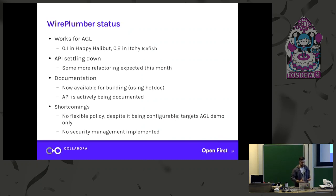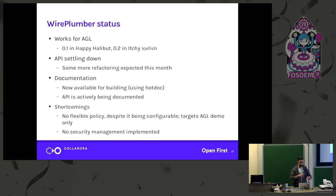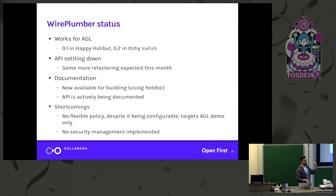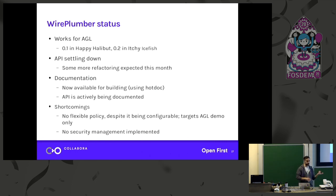So what's the status of WirePlumber right now? It currently works nicely for AGL. On the demo that we have at Building K, we use PipeWire and WirePlumber. The API is settling down — we are doing some more refactoring at the API level, on the library, but it's settling down. We just recently started generating documentation using HotDoc, and I'm in the process of documenting right now — I pushed some docs last week. There are some shortcomings: it doesn't have flexible policy — although the policy is configurable, it's not configurable enough. It works only for the AGL demo and nothing else right now. And there is no security management implemented — we just give access to all applications, which is bad.